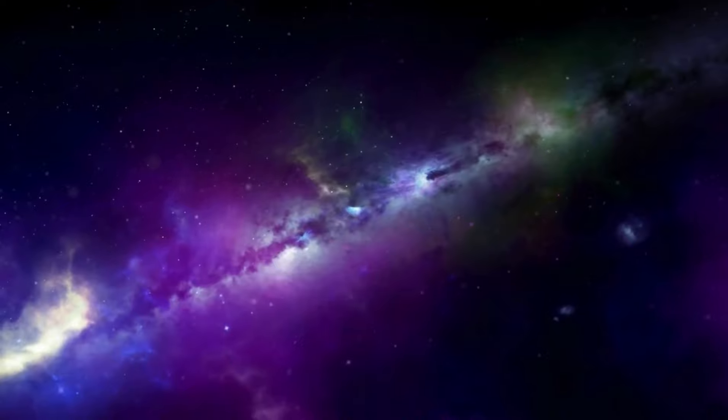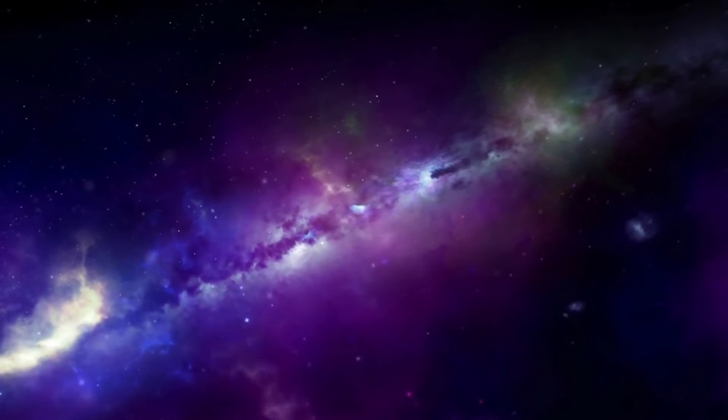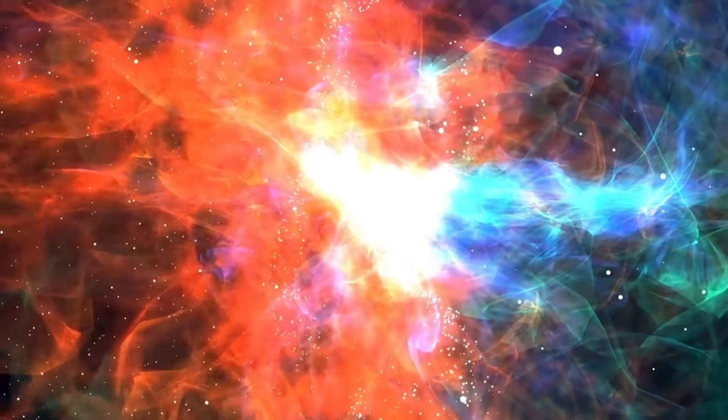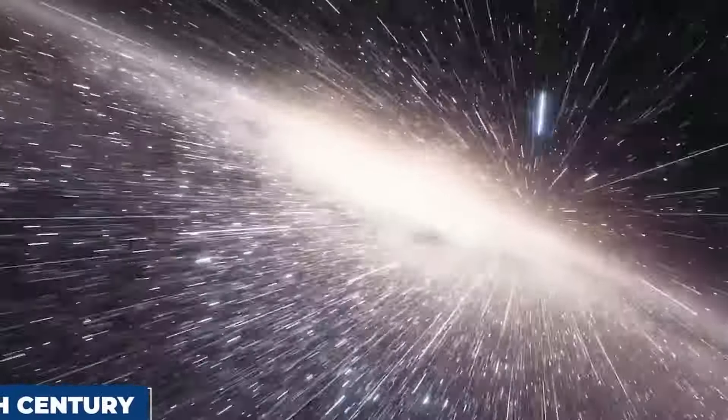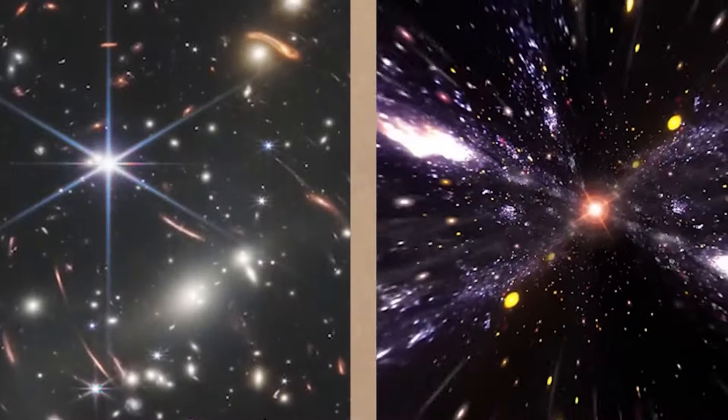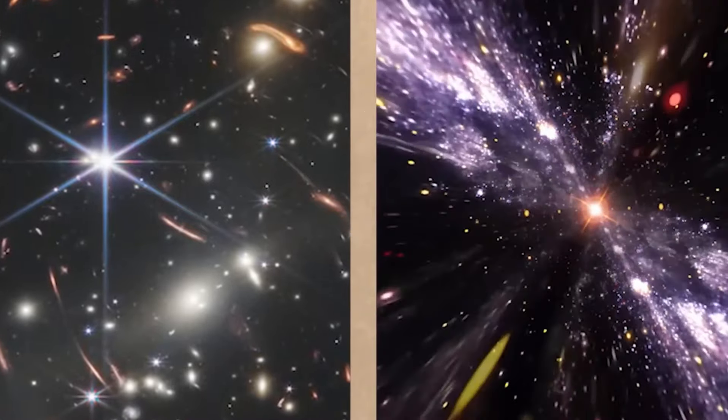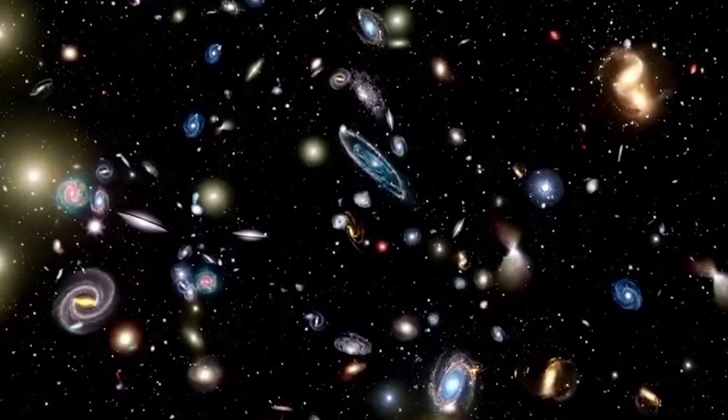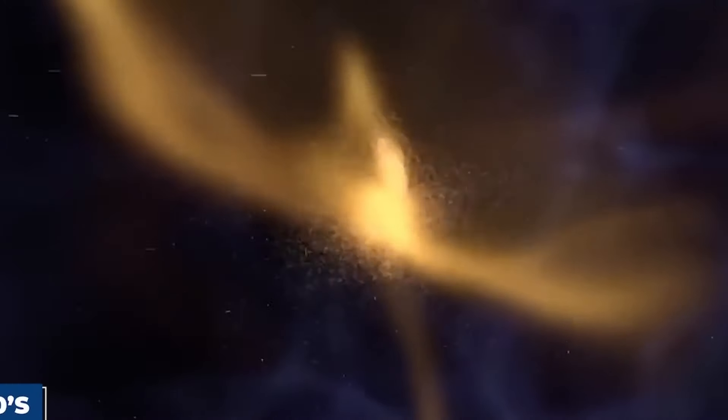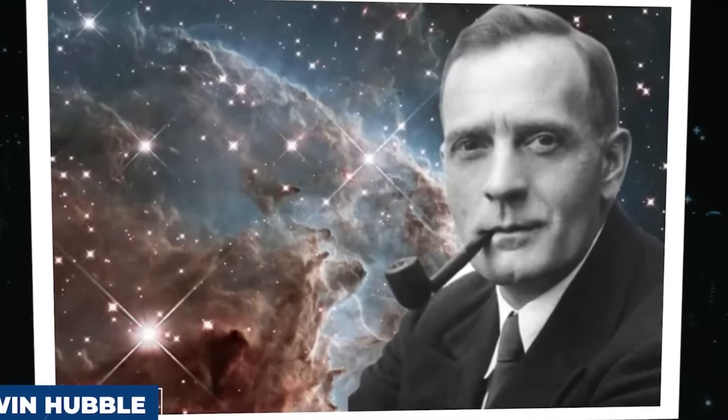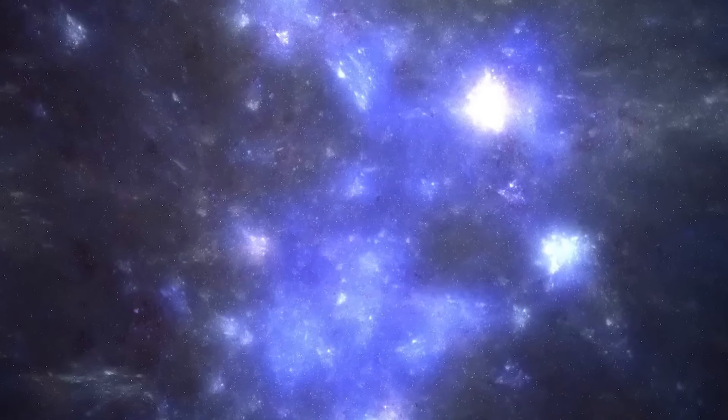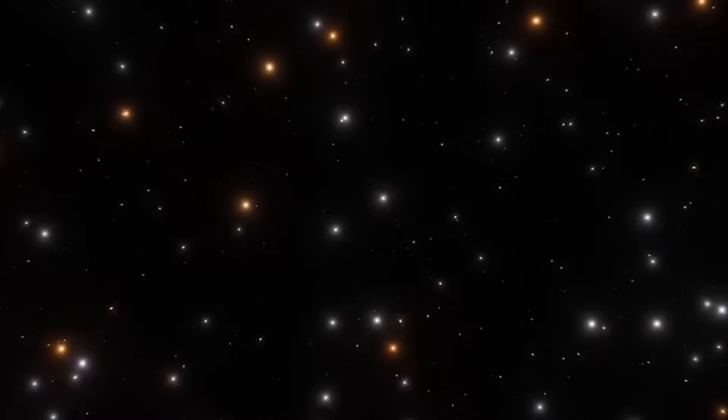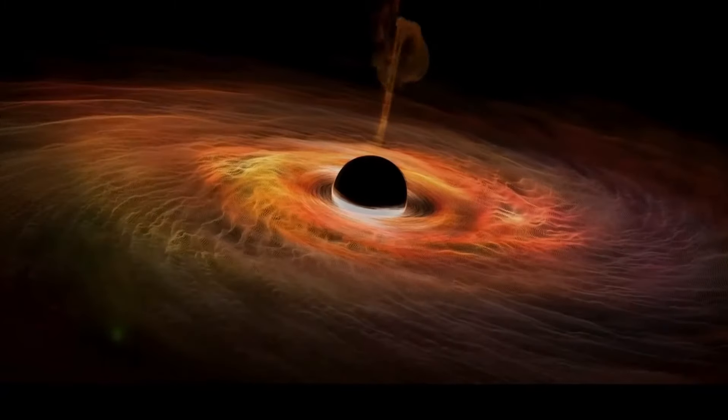In the Andromeda galaxy, scientists have found strong clues pointing to the existence of dark matter. They notice something unusual about how the stars move within it. Normally, they expect stars farther from the center to move slower than those closer to the middle, but in Andromeda they all move at pretty much the same speed. Michio Kaku believes there must be something else at play, something invisible but massive: dark matter.